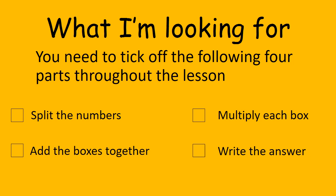In this activity I have made a checklist of four stages of our split strategy area model that we can follow to get the correct answer. Throughout our lesson I'll be looking for the four following parts: firstly splitting the numbers, then multiplying each box, adding the numbers inside the box together, and finally writing the answer in the number sentence.